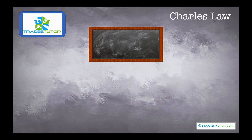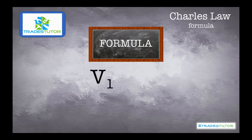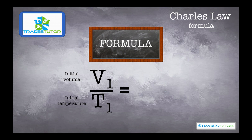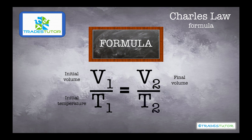Now, next part is the formula. What you have is V1, which is the initial volume. You have T1, which is the initial temperature. And that's going to equal, on the other side, volume 2 over temperature 2. So as the volume goes up, the temperature goes up. Or if the volume went down, the temperature went down.